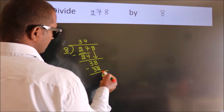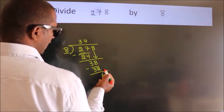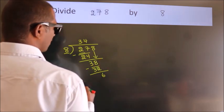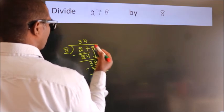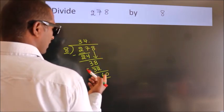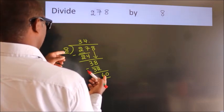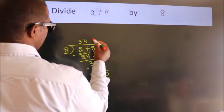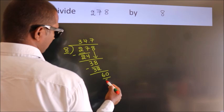After this, no more numbers to bring down. So what we do is, we put a dot and take 0. So, 60. A number close to 60 in the 8 table is 8 sevenths, 56.